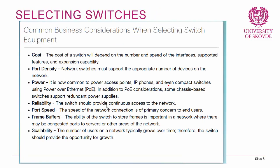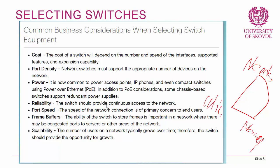Moving on to a short discussion on how to select switches. There are business considerations when selecting switching equipment — the overall questions form a triangle of needs, money, and wishes. We may want a switch that supports all our needs and wishes, but the money factor usually means we have to buy the best possible for the budget we have. The cost of a switch depends on the number of ports, the speed of the ports — fast Ethernet, Gigabit Ethernet, 10 Gigabit Ethernet — and what features it supports, whether it's a layer 2 switch, if it supports routing, what security it offers, and how easily it can be expanded.